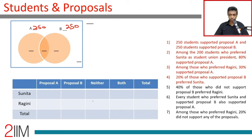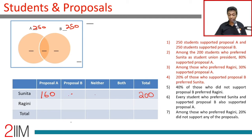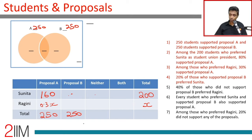Among the 200 students who preferred Sunita for union president, 80% supported proposal A — that's 160. Don't immediately say 40 supported proposal B because there could be an overlap. The total for proposal A is 250 and total for proposal B is 250. Among those who preferred Ragini — if total is X — then 30% of X supported proposal A, so 0.3X. Then, 20% of those who supported proposal B preferred Sunita: 20% of 250 is one-fifth of 250, which is 50.